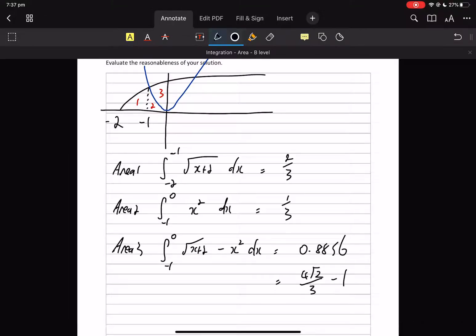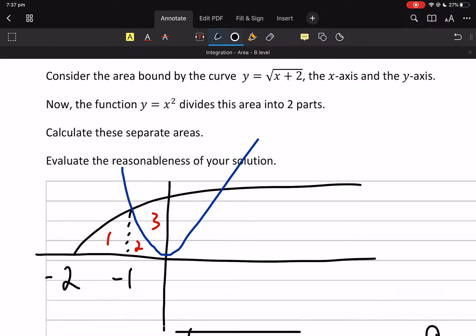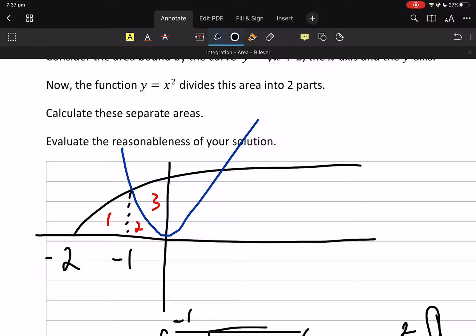So you're looking at Area 1 and 2 being 1 square unit, and Area 3 being 4√2/3 - 1. That'll do. Now let's look at this: evaluate the reasonableness of your solution. Why don't we look at what the area is under the square root function?